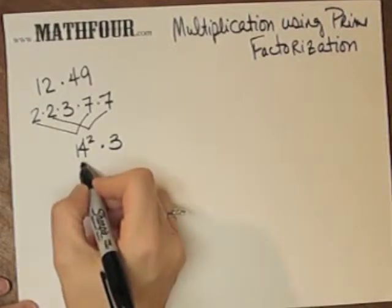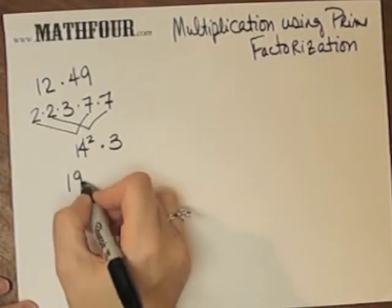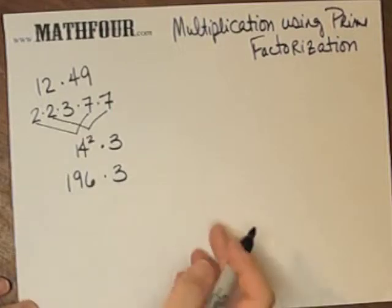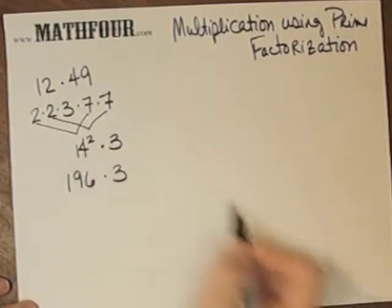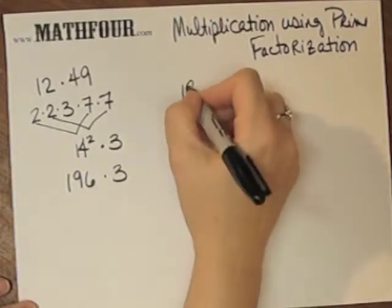14 squared, which I know is 196—I know my squares up to 15 at least. Couldn't hurt to memorize those just like you memorize things like 2 times 7. So 196 times 3.